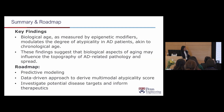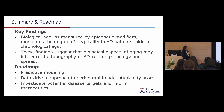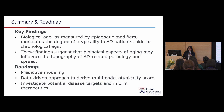To wrap up: we have defined a measure of biological age and associated it with the presentation of Alzheimer's disease, or atypicality. These findings suggest that biological aspects of aging influence the topography of AD-related pathology and spread. Next steps include predictive modeling to see how biological age predicts future outcomes, data-driven approaches to derive a multimodal score rather than defining it anatomically, and investigating potential disease targets to inform therapeutics.